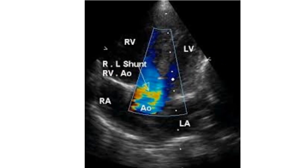Apical 5-chamber view in Tetralogy of Fallot demonstrating the sub-aortic ventricular septal defect with aortic override. Fifty percent of the aorta is committed to the left ventricle while the remaining half is committed to the right ventricle.